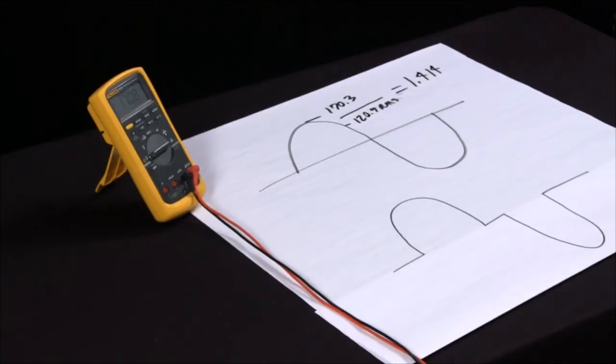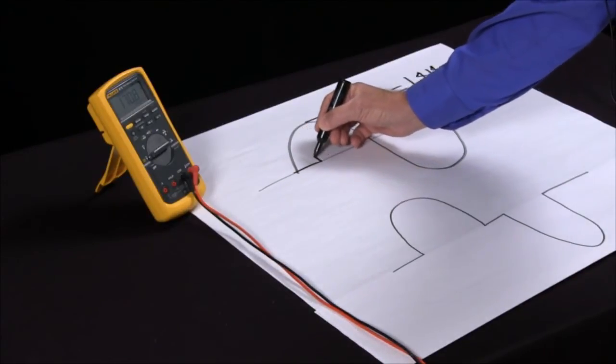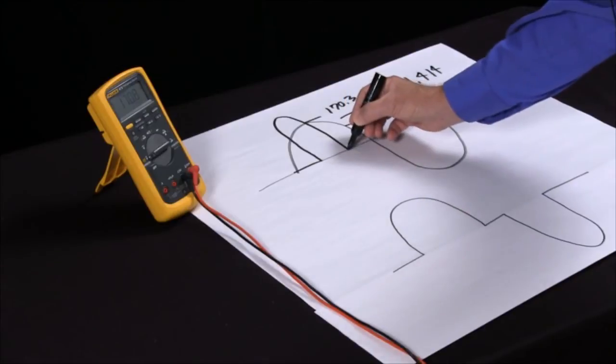Now if we have a signal that is distorted or has quite a bit of harmonics in it, what happens is the peak gets higher and the RMS gets lower.